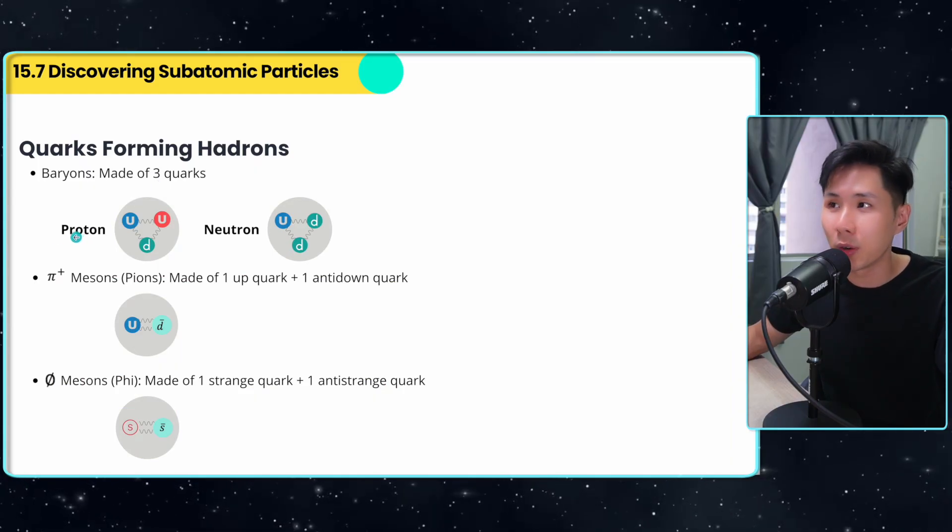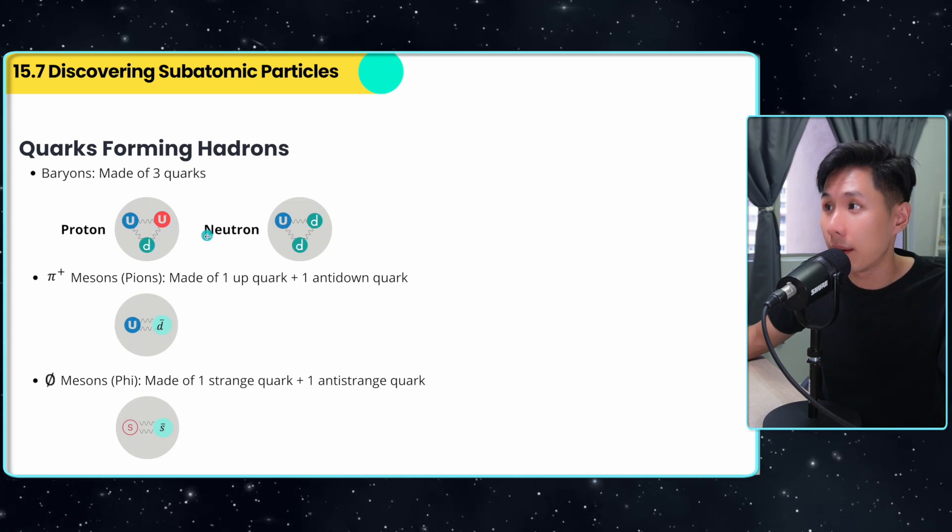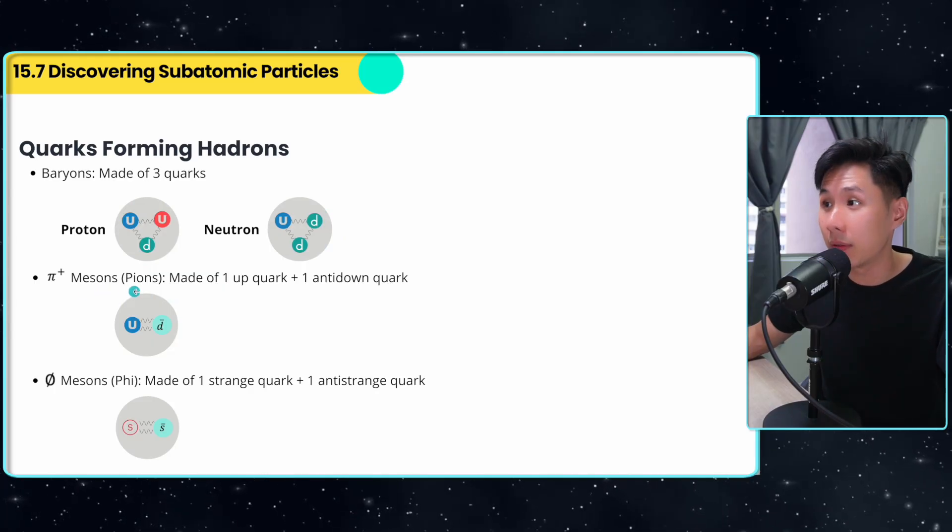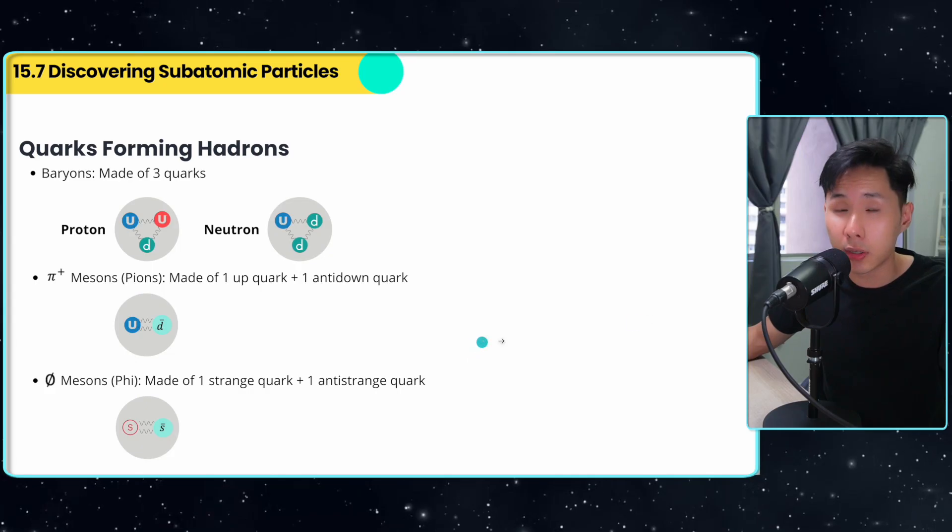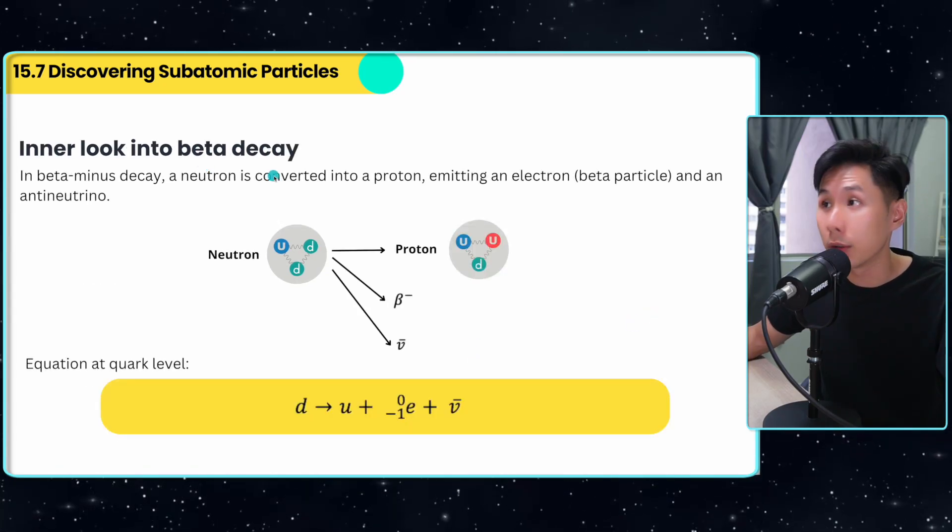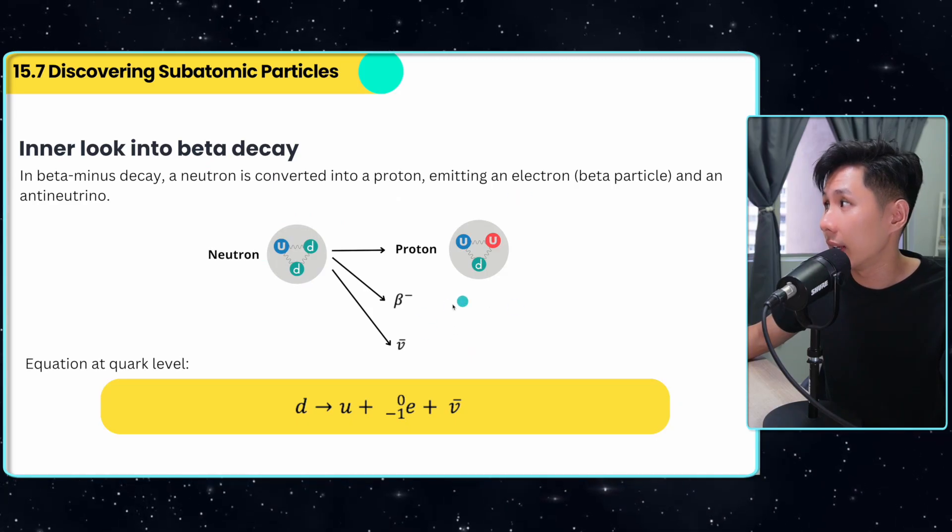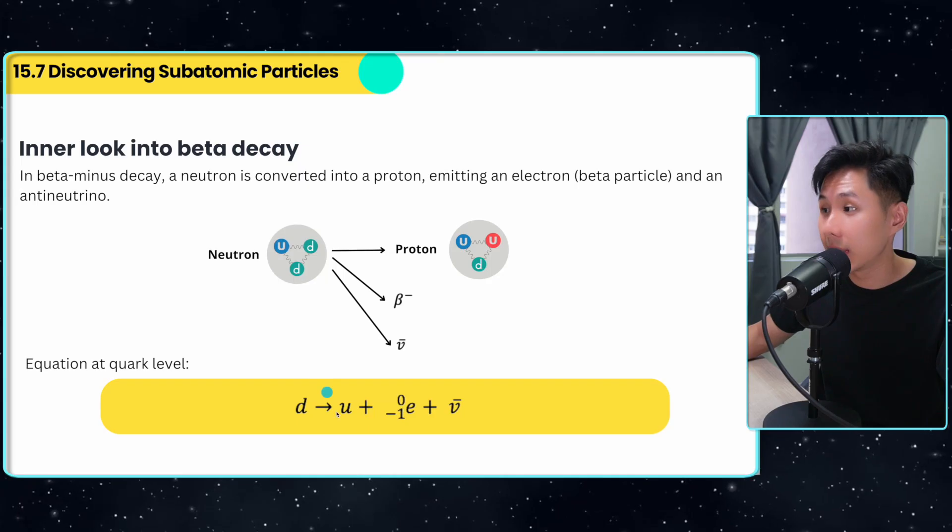A proton is no longer known as the fundamental particle. They are made up of two up quarks and one down quark, whereas a neutron is made up of one up quark and two down quarks. We also have another type of hadrons like pions and phi. These are their compositions. If we look closer at beta decay, a neutron is converted to a proton emitting an electron.